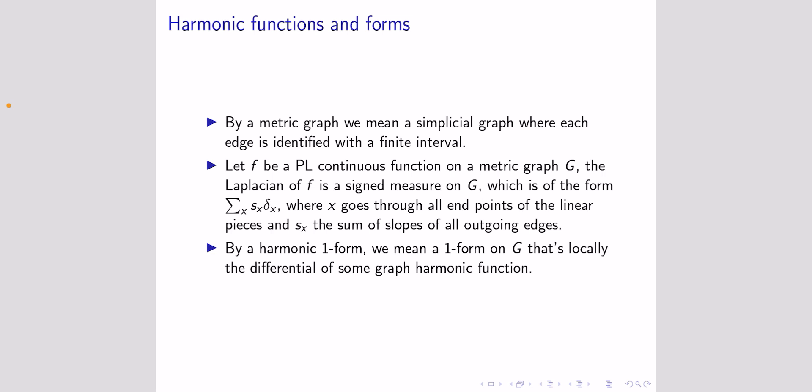One can see easily that if the metric graph is finite and connected, then any piecewise linear function has zero Laplacian if and only if the function is constant. We can define the concept of a graph harmonic function as a function where the Laplacian equals zero, and we can also define a piecewise linear function to be harmonic on some open subset of the graph if the Laplacian restricted to that open subset equals zero.